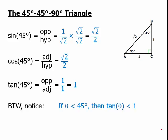By the way, notice if an angle is less than 45 degrees, then it has a tangent of less than 1. If an angle is greater than 45 degrees, it has a tangent greater than 1. So that's an important point, and of course, when it's exactly 45 degrees, the tangent is exactly 1.